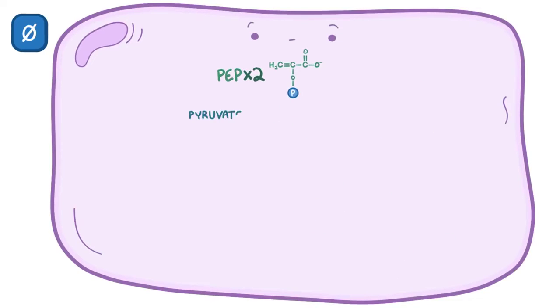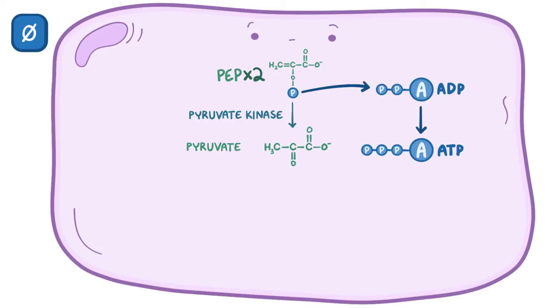Finally, the enzyme pyruvate kinase transfers a phosphate from PEP to ADP, making pyruvate and ATP as a byproduct. This is our third and last irreversible reaction of glycolysis, and again we'll add two ATPs to our counter because this reaction happens twice.